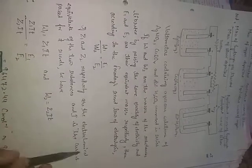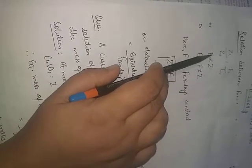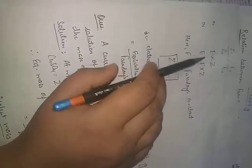If Z₁ and Z₂ are the electrochemical equivalents of the two substances and current I flows for time T seconds, then W₁ = Z₁IT and W₂ = Z₂IT. So Z₁IT / Z₂IT = E₁/E₂. Since current and time are the same, they cancel, giving Z₁/Z₂ = E₁/E₂, meaning E and Z are directly proportional to each other.